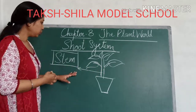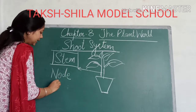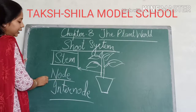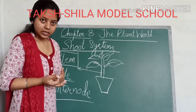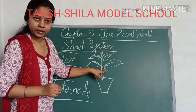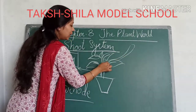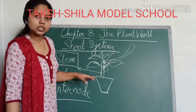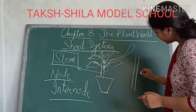There are basically two parts that the stem consists of: first is the node, and second is the internode. The node is that region from which a branch or leaves arise. So wherever a branch arises or leaves arise from the stem, that portion is called the node.